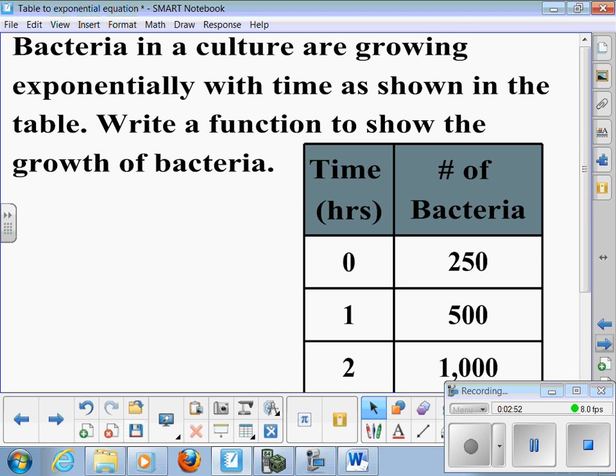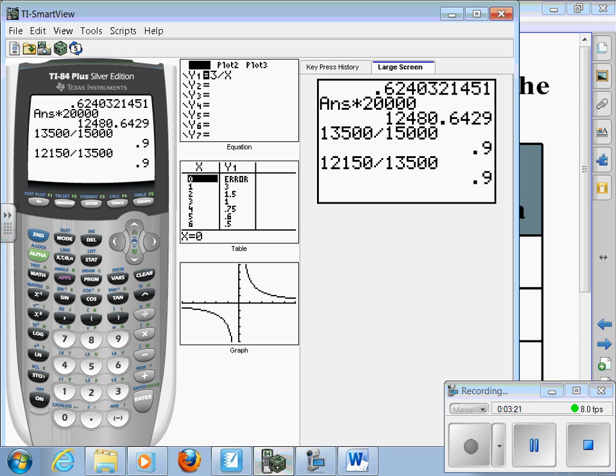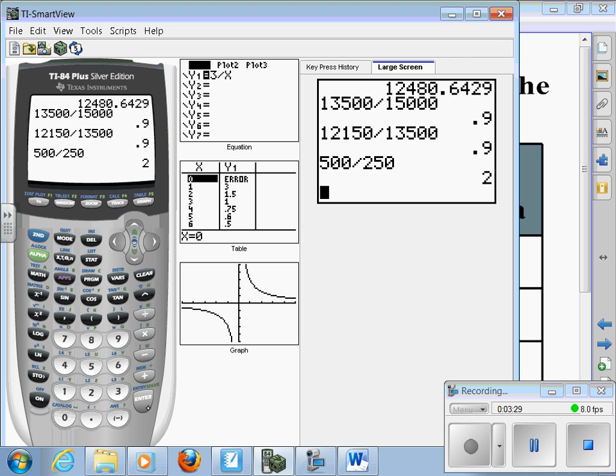Another table shows bacteria, the number of bacteria, and that number is increasing each hour. So if we see how much it increased, we would compare the 500 to the 250. So if we say 500 divided by 250, that's twice as much. 500 is twice as much as 250.